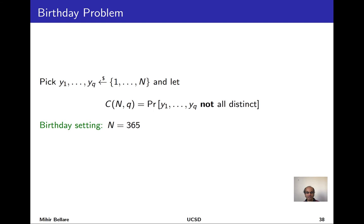In cryptographic applications we imagine we're on a planet which has N days in the year rather than 365, and we're picking birthdays at random from that. They needn't be numbers from 1 through N; they're just elements in some set of size big N. In cryptography that set is often the set of all strings of some length little n, so big N is 2 to the power little n. C of N, Q — the collision probability — is the probability that the chosen Q points are not all distinct. The takeaway is that the collision probability grows roughly as Q squared divided by twice the size of the range.